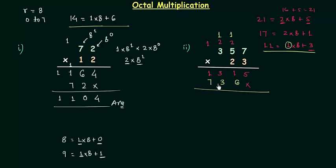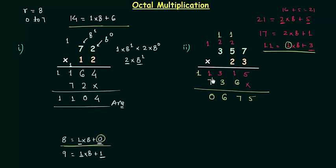Now we will add the partial products. 5 will come here. 1 plus 6 is 7. 3 plus 3 is 6, and 1 plus 7 is 8. 8 we have to write as: 0 is the sum and 1 is the carry. So finally we have 1 0 6 7 5 as the answer.